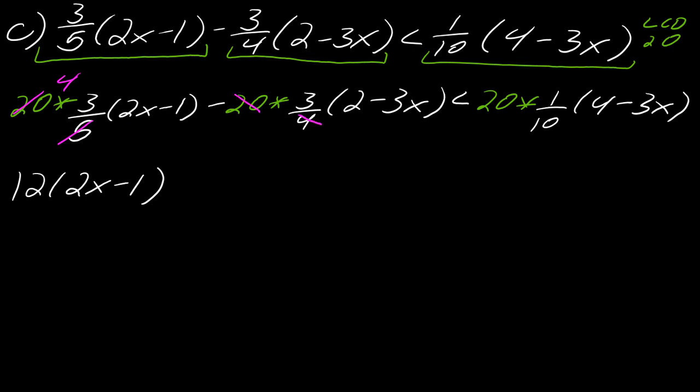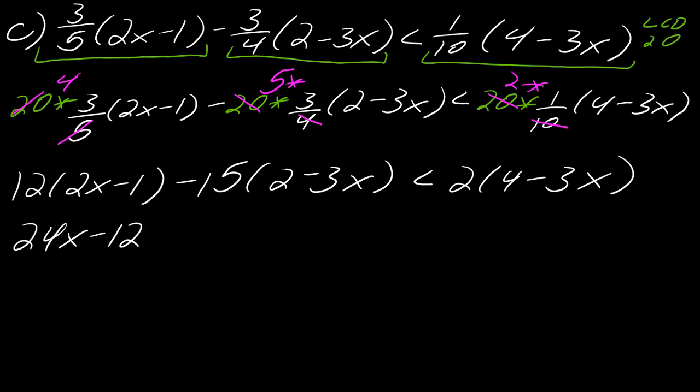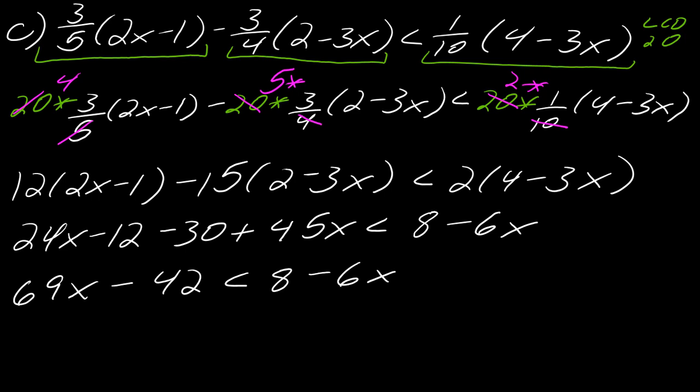Okay, so continuing on. So 4 goes into 20 five times, and then 5 times 3 is 15. So this will be minus 15, and then (2 - 3x). And then finally, 10 goes into 20 two times. So 2 times 1 is 2, and then I've got (4 - 3x). And now I've cleared the fractions, so I can just press ahead with the problem now and distribute. So as I distribute, this becomes 24x - 12. Now be careful with the next one. This is a minus 15, so make sure you capture that minus. So this becomes -30 + 45x, and this is less than 8 - 6x. Okay, so continuing on. So it looks like this is going to become 69x - 42 is less than 8 - 6x.